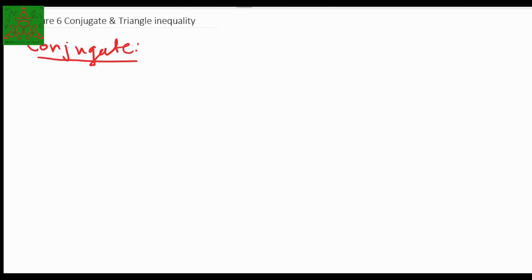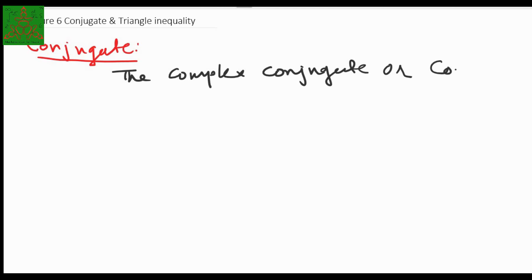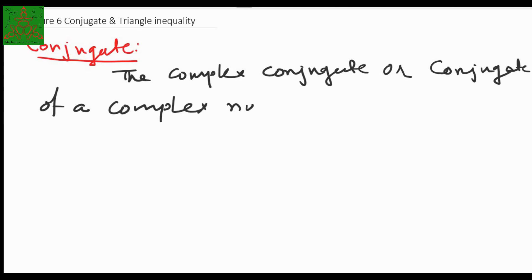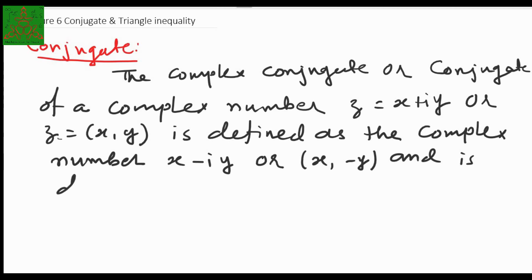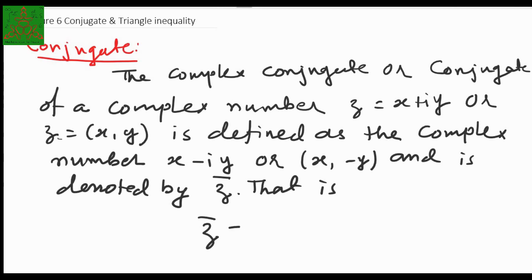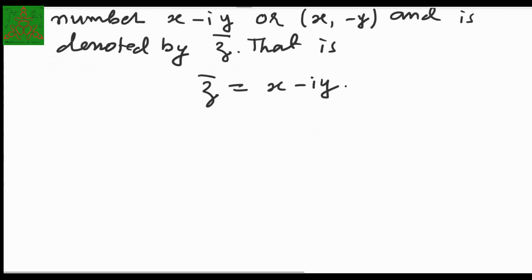We will start with the conjugate, also called the complex conjugate. The complex conjugate of a complex number z = x + iy, written as an ordered pair (x, y), is defined as the complex number x − iy, or the ordered pair (x, −y). It is denoted by z̄. So z̄ = x − iy. The conjugate of (x, y) is (x, −y).